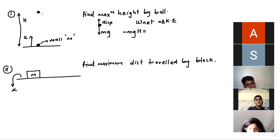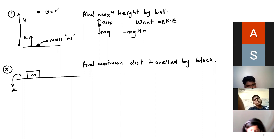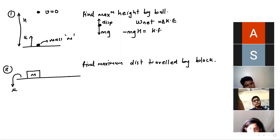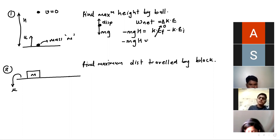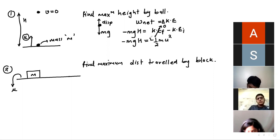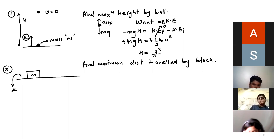For the final kinetic energy: at maximum height, what will the velocity be? The velocity will be zero. So the final kinetic energy is zero. So: –Mgh = 0 – ½Mu². Minus and minus cancel, M and M cancel. We get height h = u²/2g.